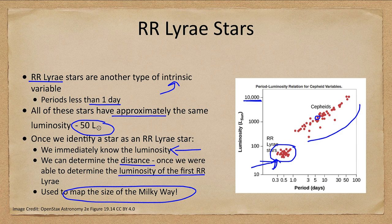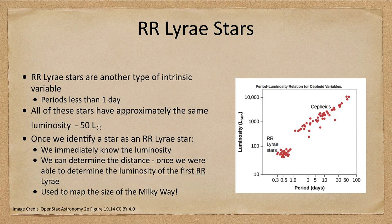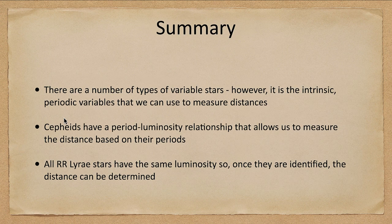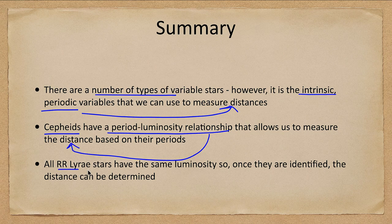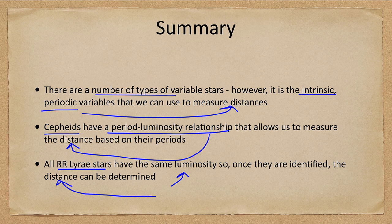So this is one of the important methods and one of the links in our distance ladder to be able to measure distances to the stars and galaxies. To summarize: we looked at different types of variable stars, but it is the intrinsic periodic variables that can be used to measure distances. We looked at the Cepheids, which have a period-luminosity relationship allowing us to get the distance based on their period. RR Lyrae stars have the same luminosity, so once they are identified, the distance can be determined. That concludes this lecture on distances to the stars — variable stars.